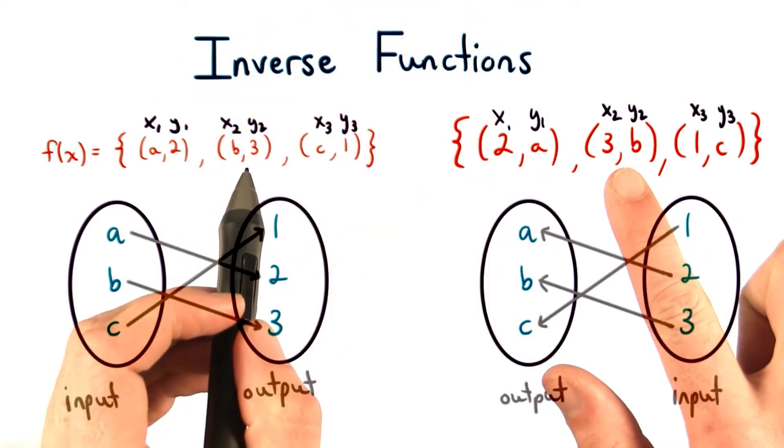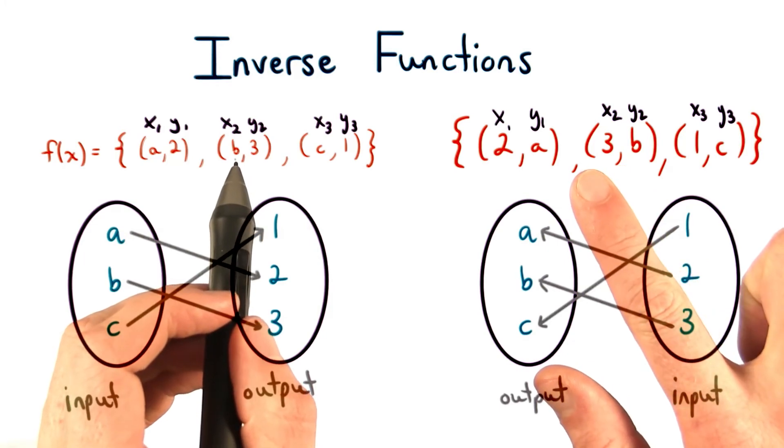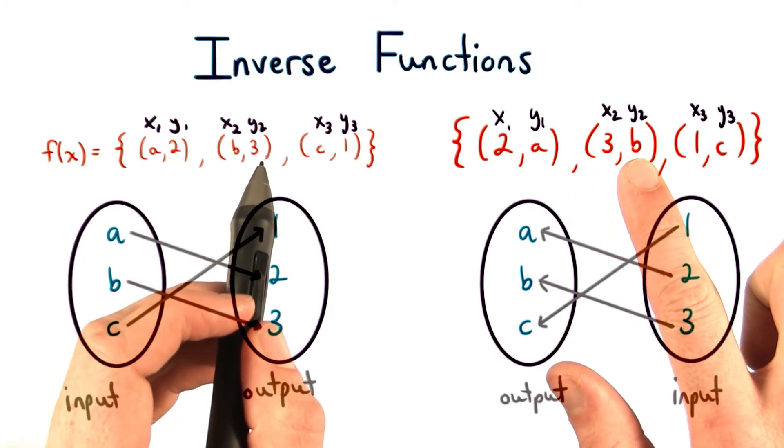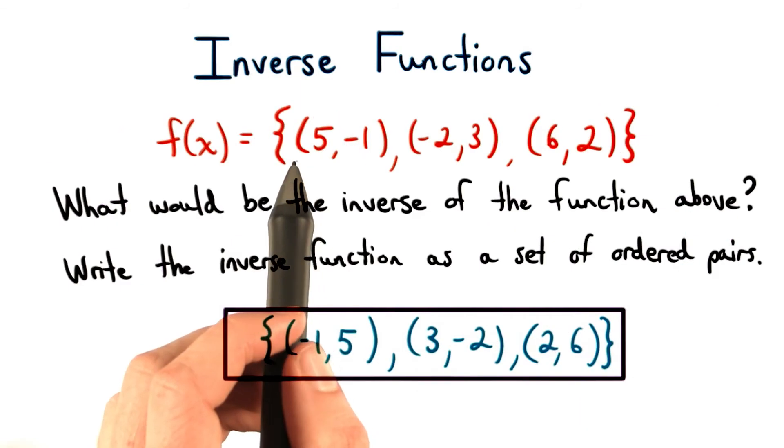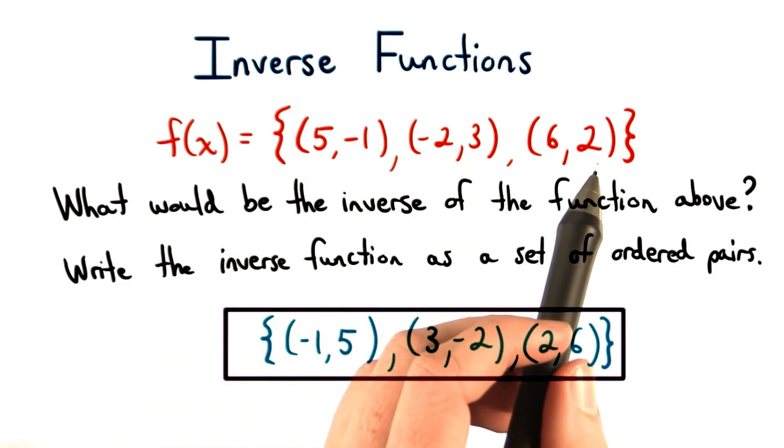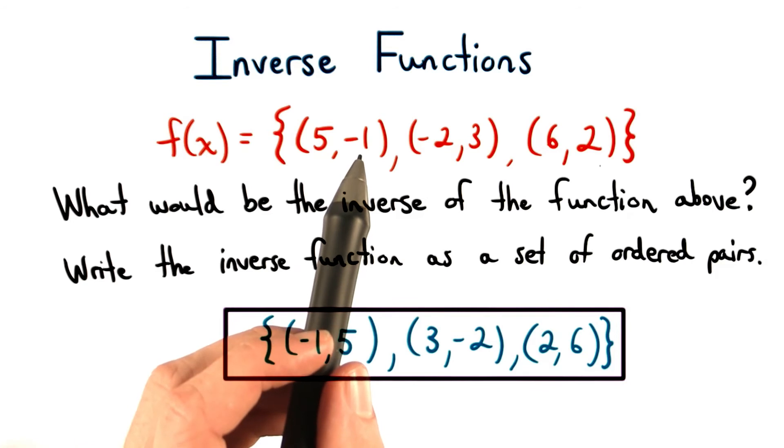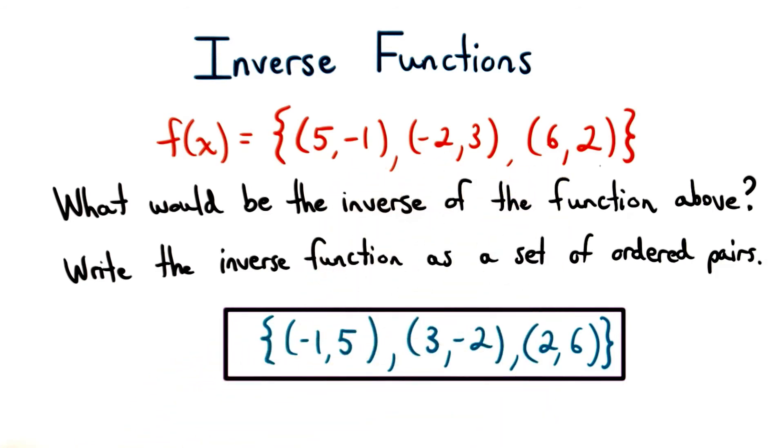This is also true for these other two points. The x value and the y value switched. The same was true for this last point. So, to find this inverse function, we simply switch the x and the y values for each coordinate pair. That's how we wind up with this function.